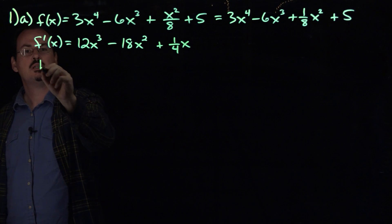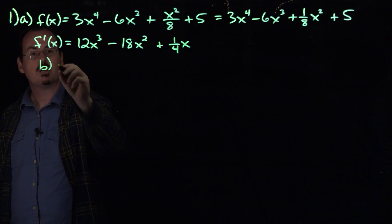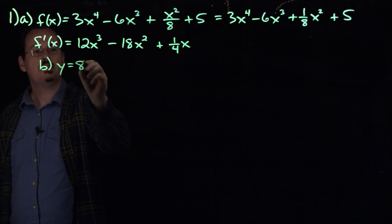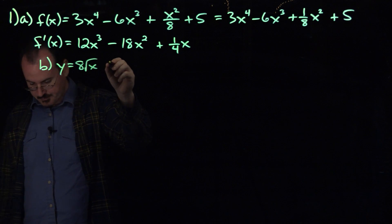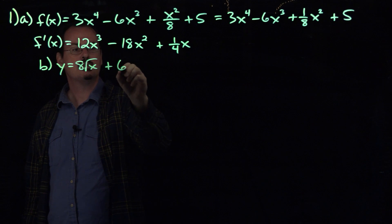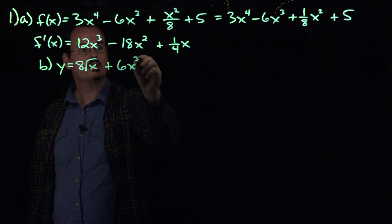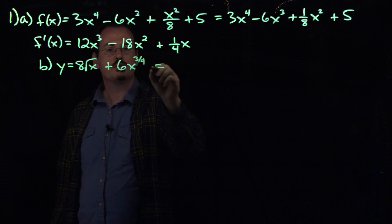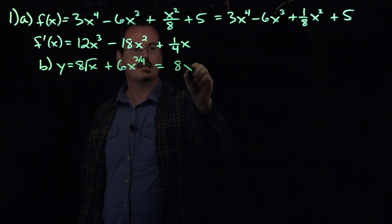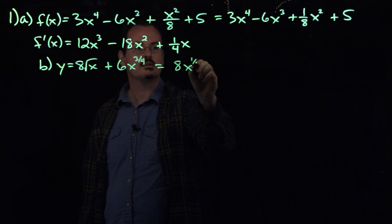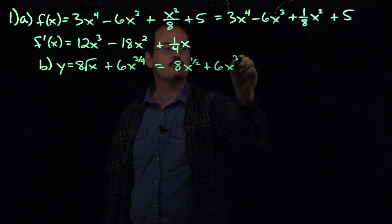Part b: the function we're given is y equals 8 square root x plus 6x to the 3/4 power. The first thing we'll do is write that root as a power, so we're going to get 8x to the 1/2 power plus 6x to the 3/4 power.